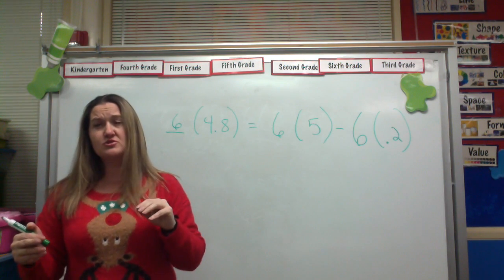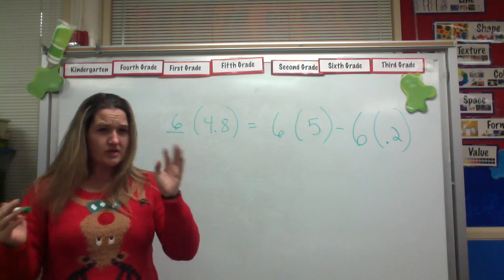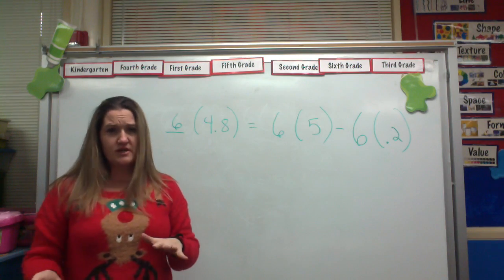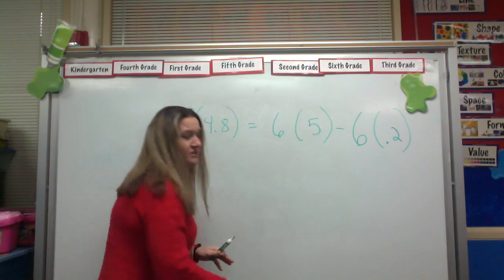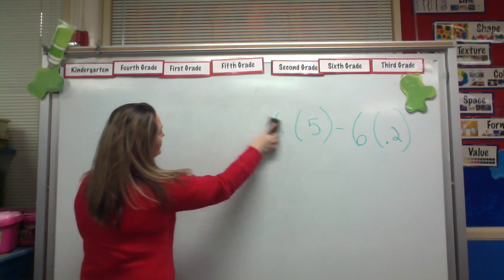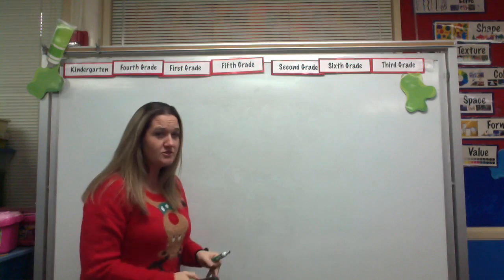5 is 0.2 greater than 4.8, so I got to go ahead and multiply 6 times 0.2 and then subtract that. That's what the distributive property is. It's just getting you to work with those numbers in your head, and it's just a way of breaking them down so they're a little easier to work with.